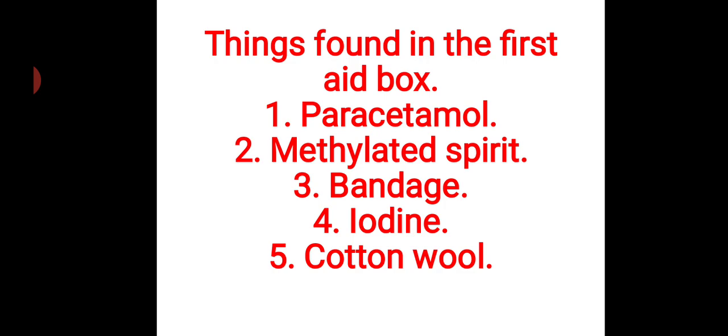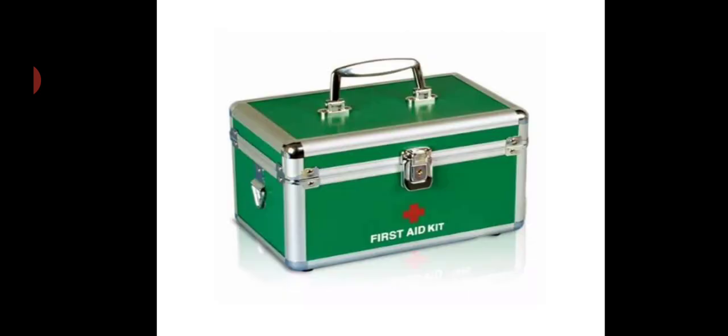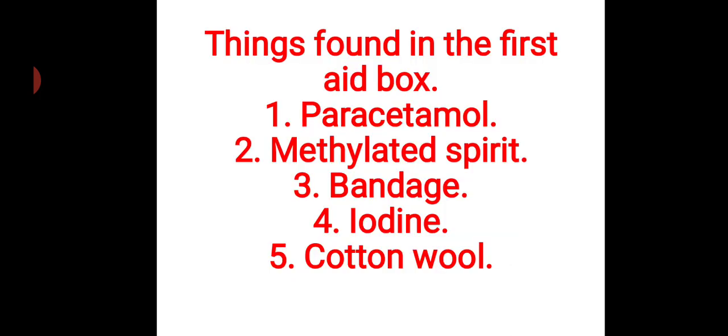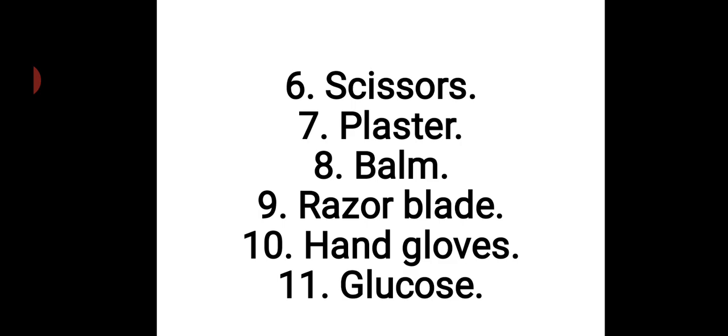The first aid box is being shown to you. The things you can find in the first aid box are: paracetamol, which we all know is taken for pains; ventilated spirit; bandage; iodine; cotton wool; scissors; plaster; balm; razor blade; hand gloves; and glucose. All these are the things you can find in a first aid box.